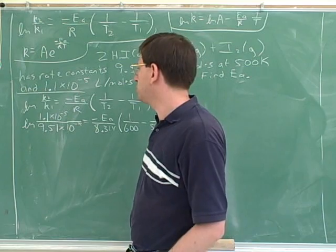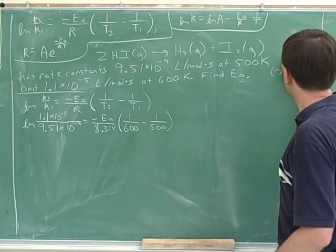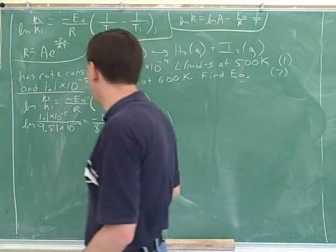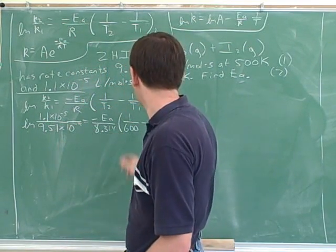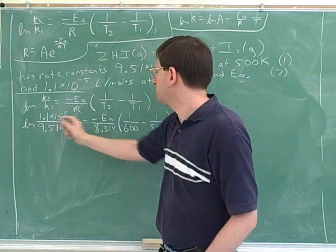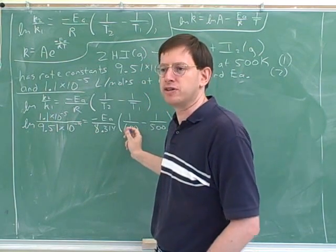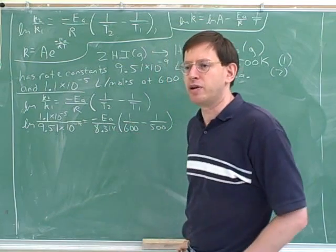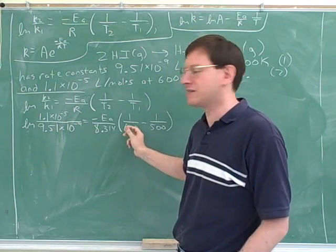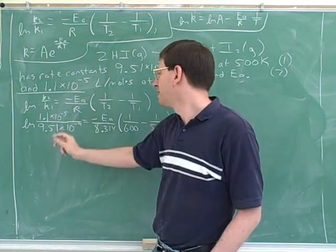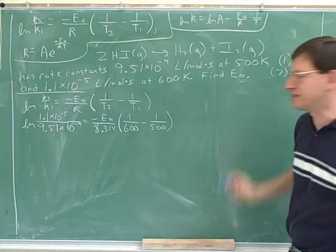You have to be careful here to distinguish situation two and situation one. It's most logical to call the second set of values situation two and the first set situation one. Notice that here I use the situation two rate constant, 1.1, and then the situation two temperature. If you had wanted to put 9.5 on top, you have to put 500 first. Make sure you haven't mixed those up. If you have 1.1 on top, you have to have 600 first in the parenthesis. If you have 9.5 on top, you have to have its temperature first, which is 500. Label these so you know which one you're talking about — that's an easy mistake to make.